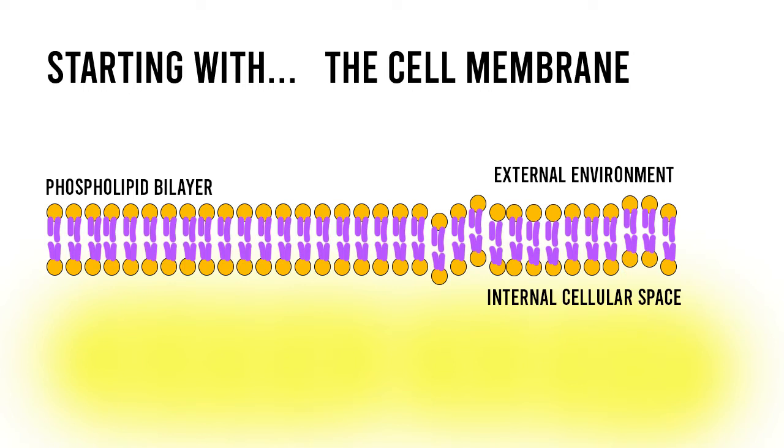This unique property makes the cell membrane selectively permeable, meaning that some substances such as small nonpolar molecules are able to pass through the cell membrane easily, while other substances such as large polar molecules tend to struggle to pass through by themselves.